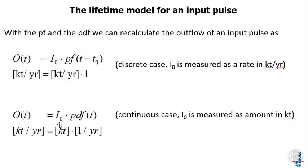In the continuous case, we do exactly the same. Only here we have a unit conflict. We would not measure the inflow in kilotons per year, but instead we would measure the total input amount just in kilotons and get the per year dimension from the PDF. By multiplying the total inflow amount by the PDF at a certain time t, we get the outflow at time t, the rate at this particular time.